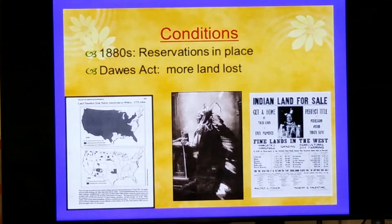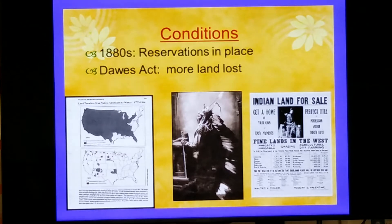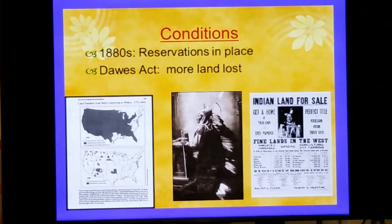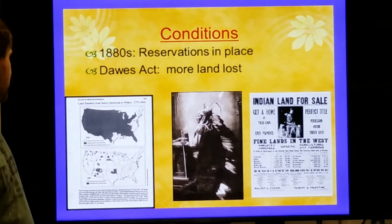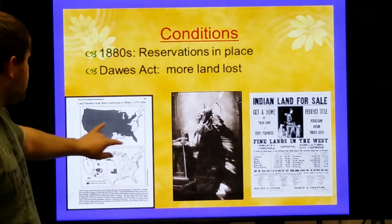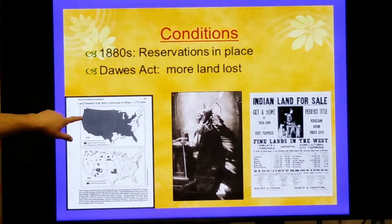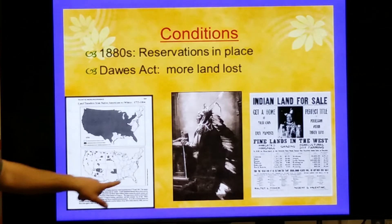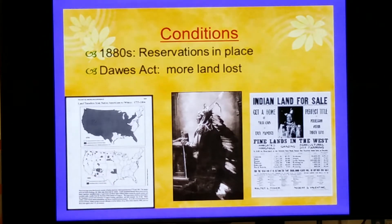So we talked about allotment. By the 1880s, all the reservations were basically in place. Looking at this map, the dark gray area shows what was controlled by Native Americans in 1715, and the last one is in the early 1900s. You fast forward into the late 1900s, and that's how much land is left. They will lose the vast majority of their land throughout all this.